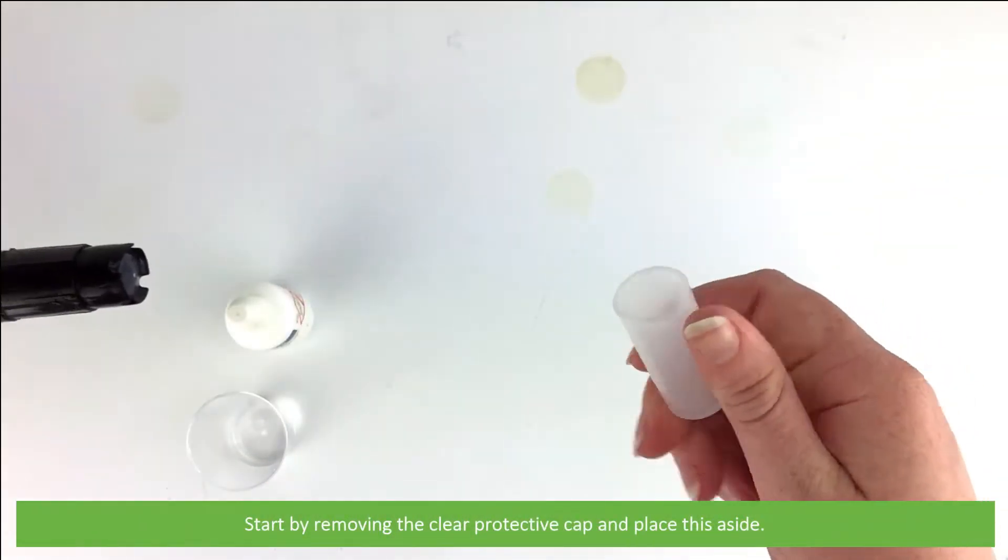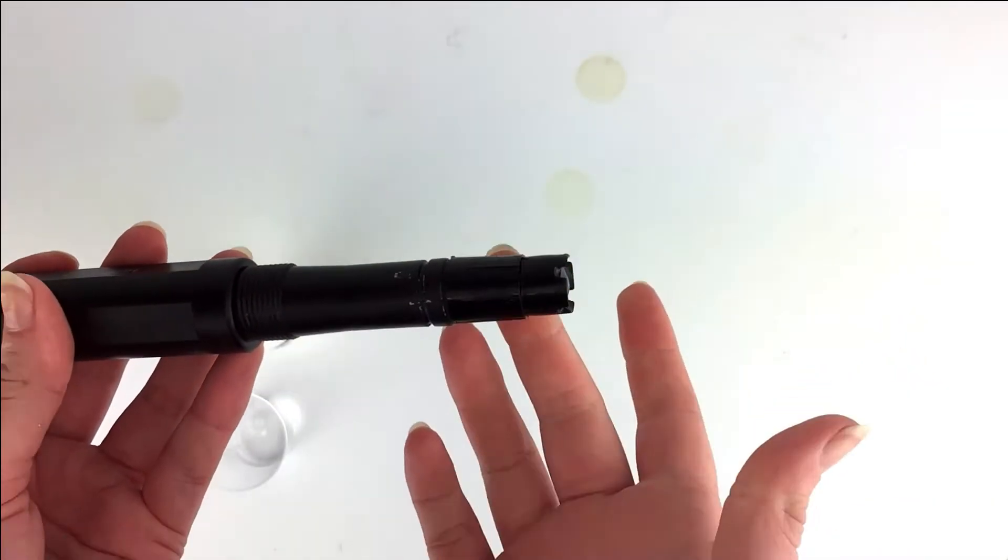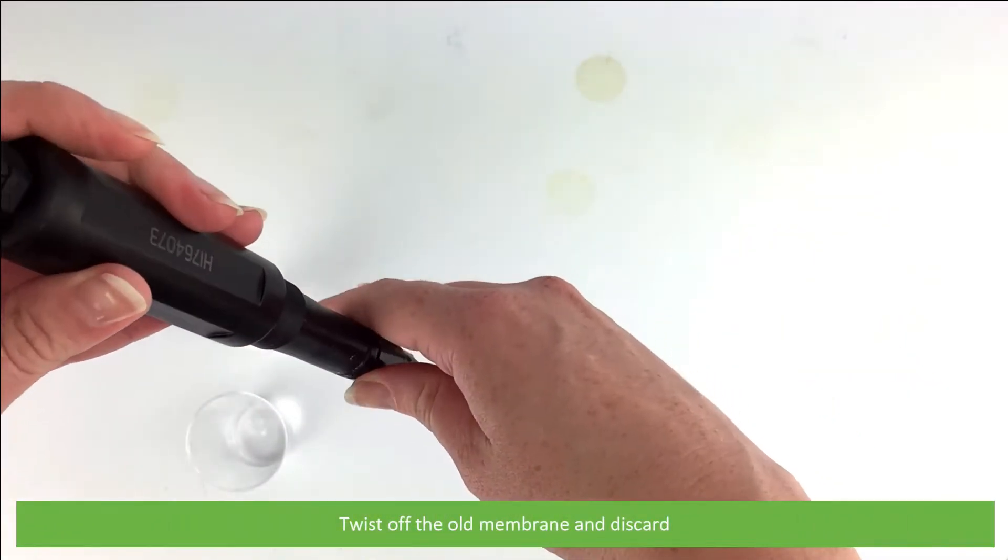Start by removing the clear protective cap and place this aside. Twist off the old membrane and discard.